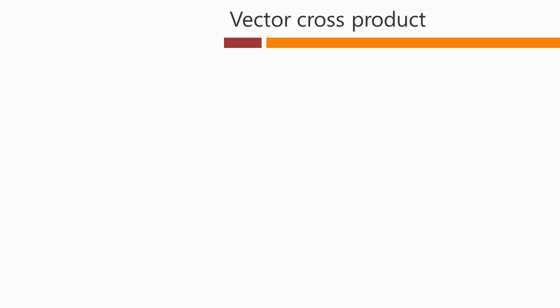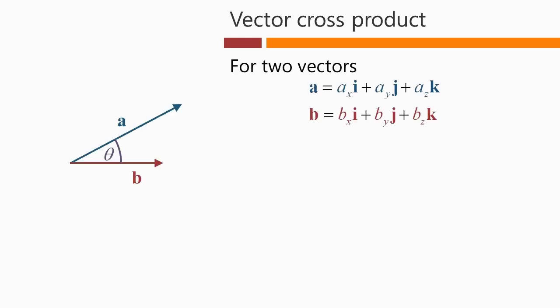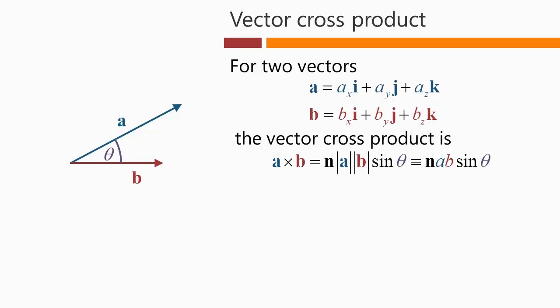The other kind of vector product is called the vector cross product. For two vectors with an angle theta between them, the vector cross product looks superficially a little like the dot product — it has the magnitude of A and the magnitude of B — but instead of cosine theta, it has sine theta. One very important difference is that this is a vector: there is a unit vector n that multiplies the result. So we have A times B times sine theta, but it is a vector in the direction n.